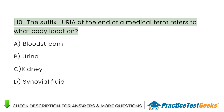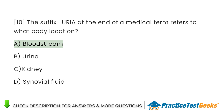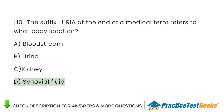The suffix U-R-I-A, at the end of a medical term, refers to what body location? A. Bloodstream. B. Urine. C. Kidney. D. Synovial fluid.